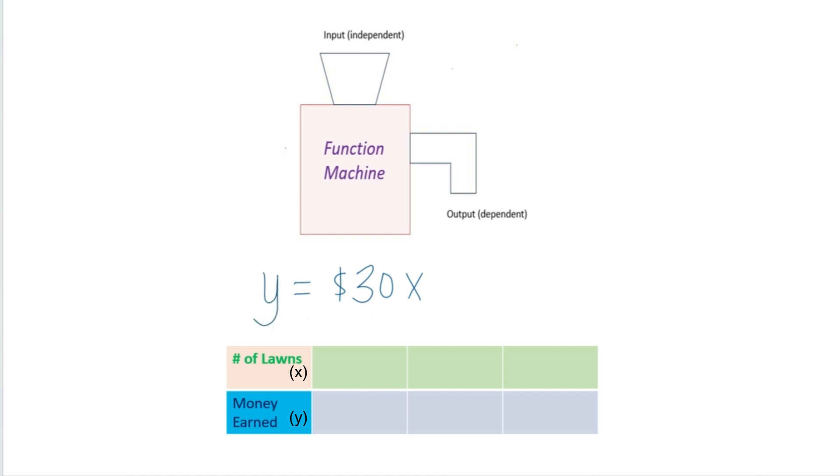Our independent variable would be the x. That's what we're going to put into our function. And our dependent variable is going to be our y.